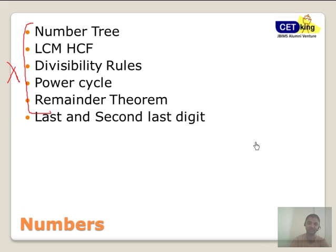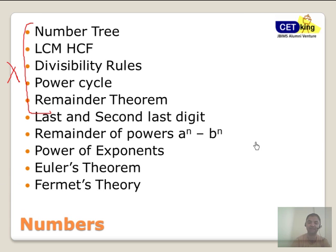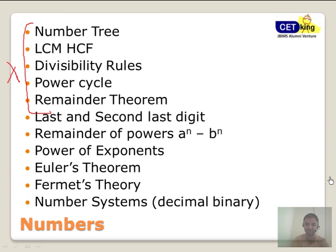But unfortunately in CAT especially, nothing is coming from this. But all the remaining areas - last and second last digits, remainder of powers, power of exponents, Euler's Theorem, Fermat's Theory, and number systems - these are the main areas where CAT has moved to.